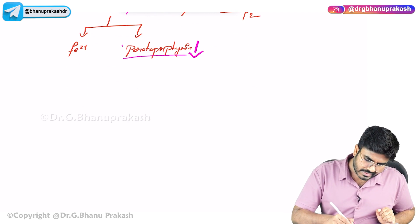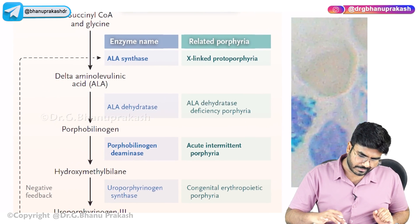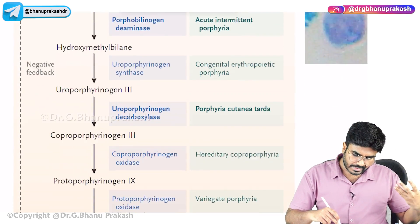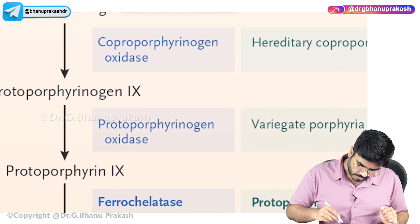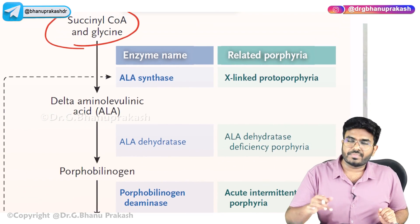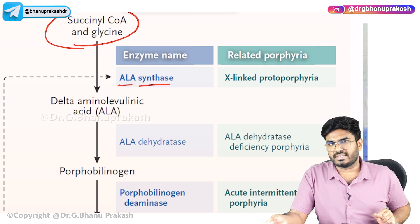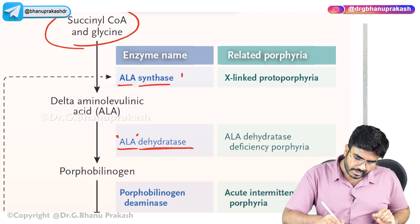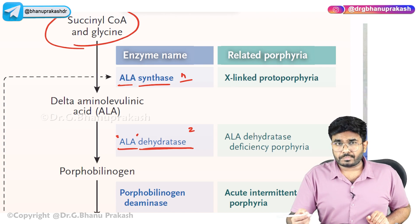Protoporphyrin synthesis begins with succinyl-CoA and glycine, which are eventually converted into protoporphyrin. The important rate-limiting enzymes are ALA synthase (aminolevulinic acid synthase) and ALA dehydratase (aminolevulinic acid dehydratase).